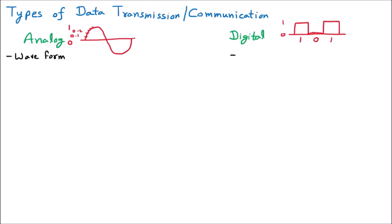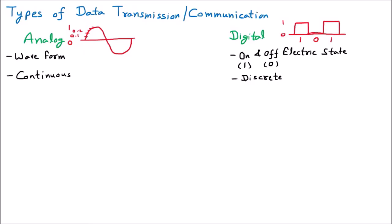Digital signals represent an on and off electric state — they represent one for on and zero for off. Whenever we are talking about any digital circuit, we are switching things on or off, like switching a fan or IC on or off. The signal is one for on and zero for off. Analog signals are not stopping anywhere — they are continuous signals, continuously moving toward the end.